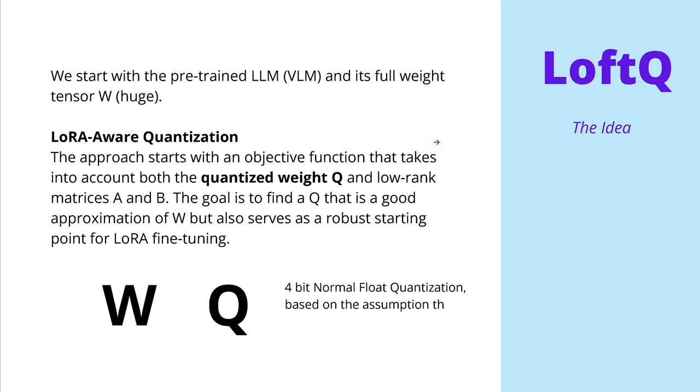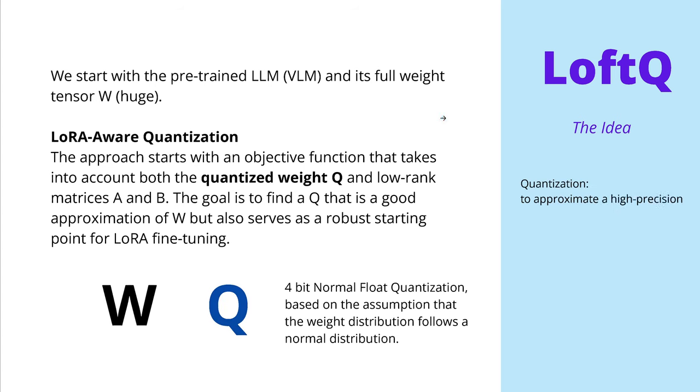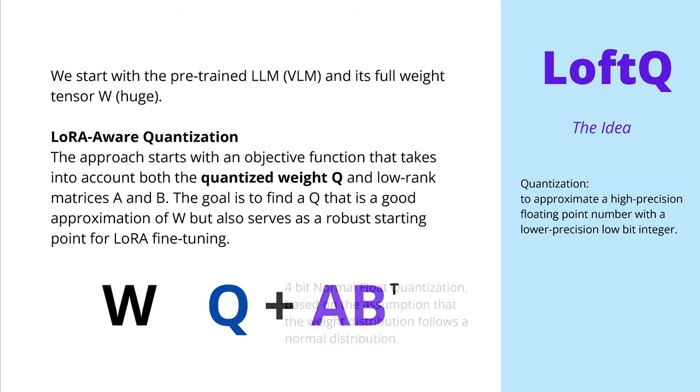So the quantization the author chooses is a 4-bit normal float quantization. Remember, careful, it's based on the assumption that the weight distribution follows here a normal distribution. So remember, quantization, we approximate here a high precision floating point number in our tensor structure with a lower precision low-bit integer. So we use less memory and the whole computation is faster.